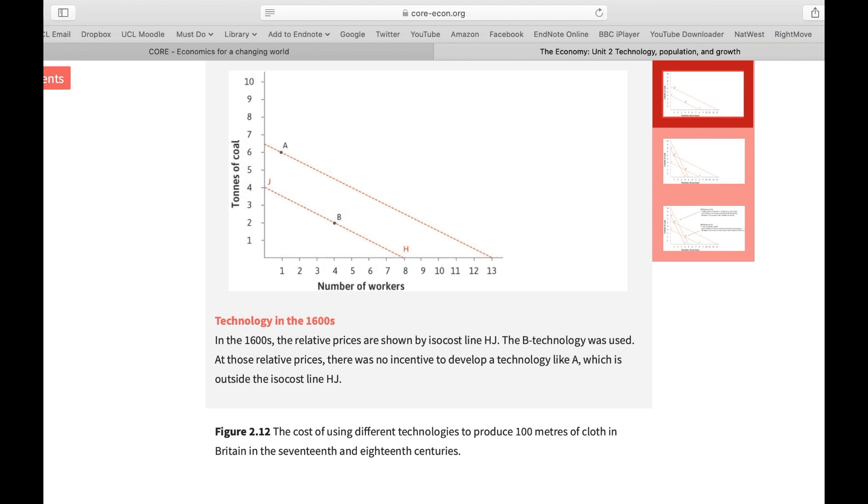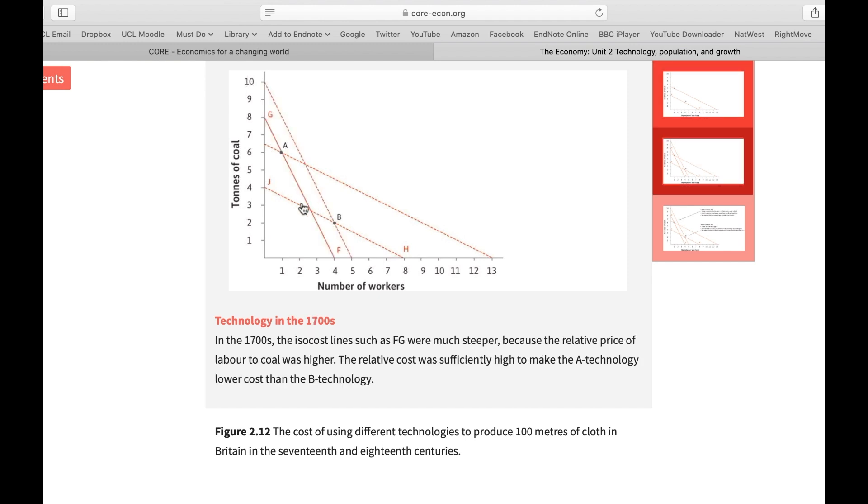But things start to change as Britain moved from the 17th century to the 18th century. Wages start to gradually increase. Therefore, Britain moved from this isocost curve of JH to this new isocost curve of FG, which is steeper and reflects the price of labor going up.